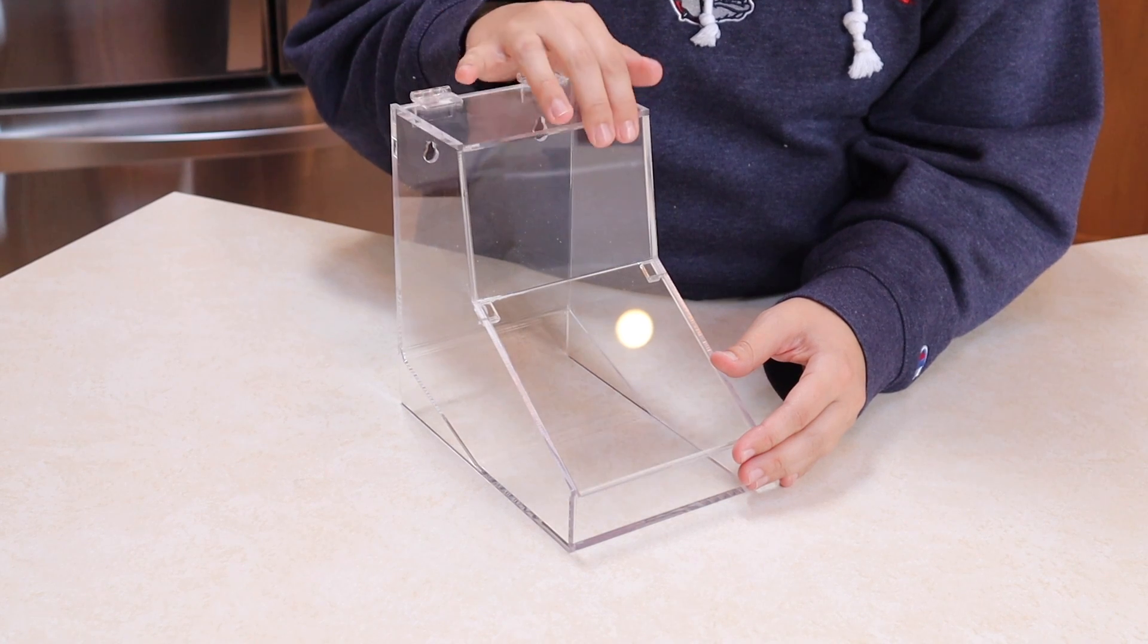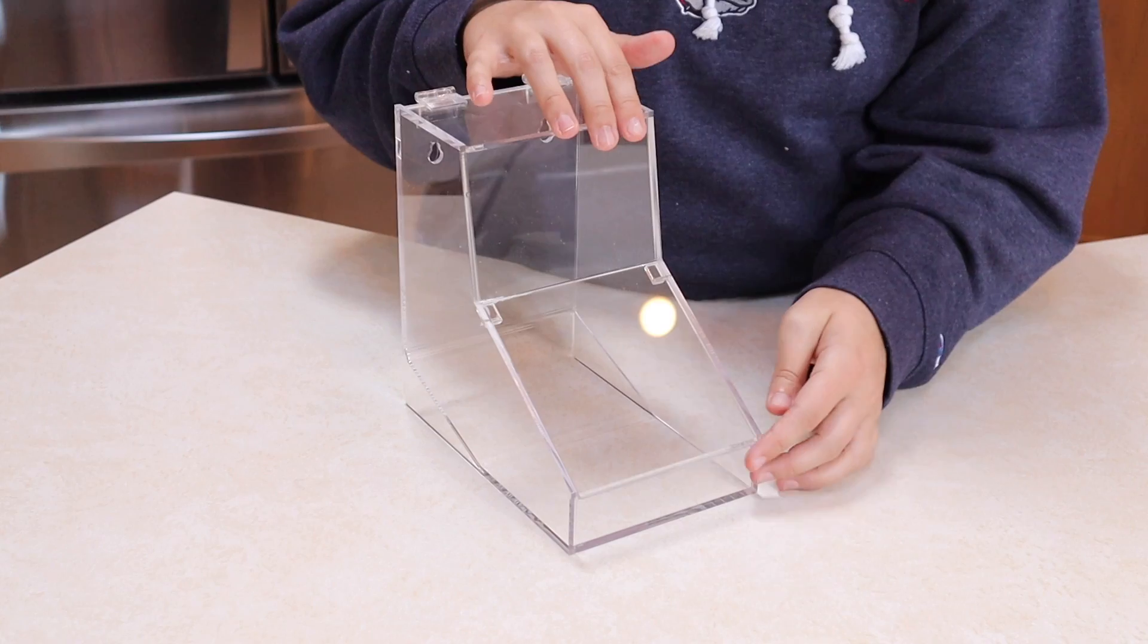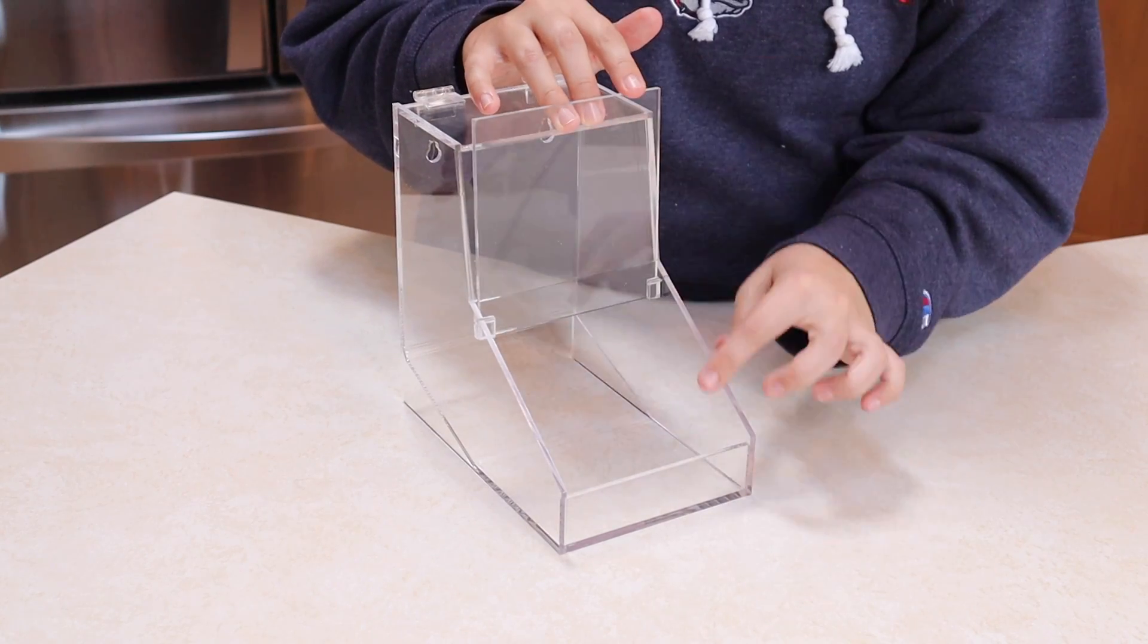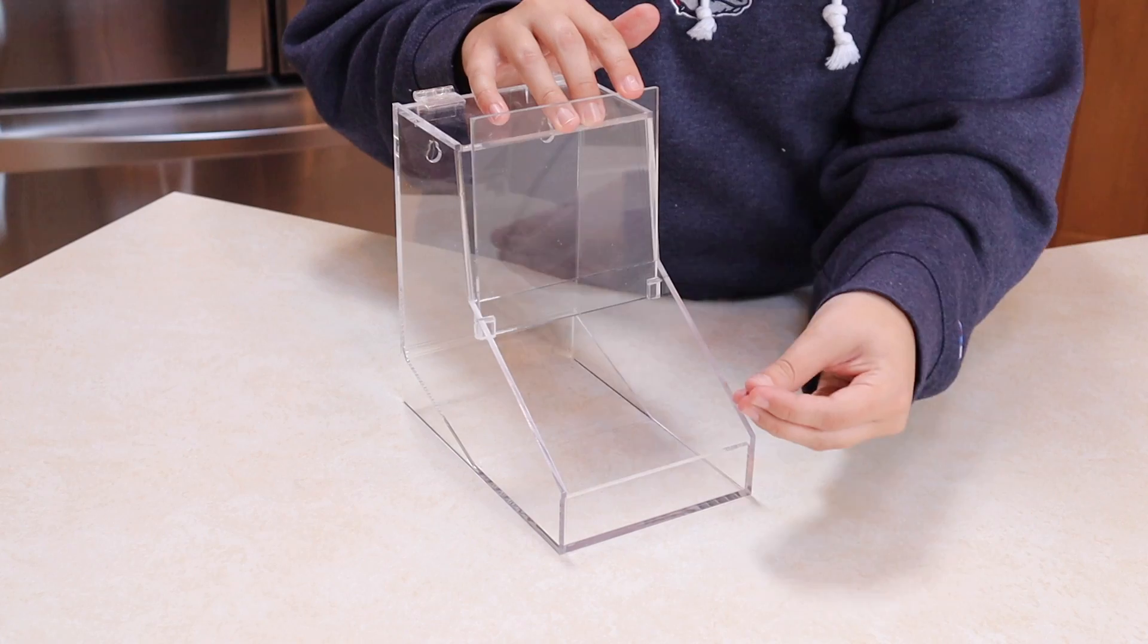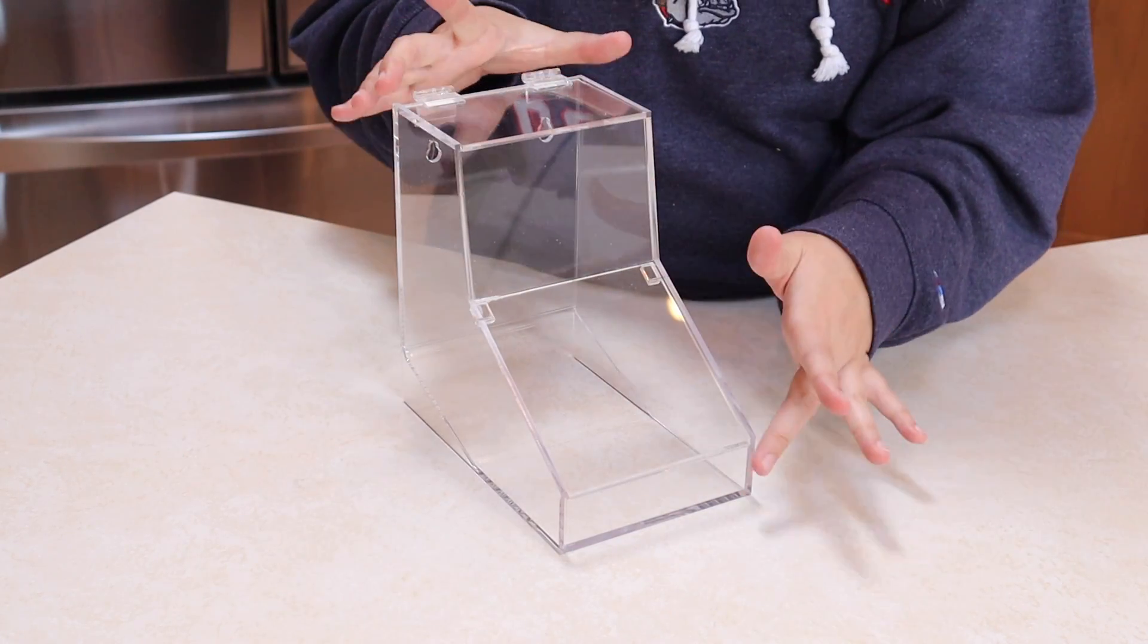You can see we have this top lid right here to fill your entire dispensing unit, and you have this lid right here where you can actually open and remove the pieces that you have inside, whether that's candy, laundry pods, or whatever you decide to use this for.